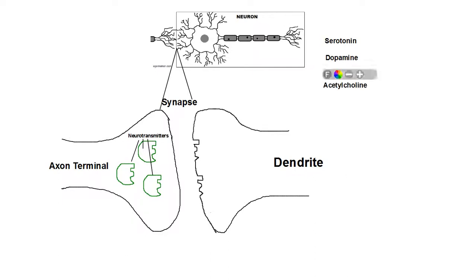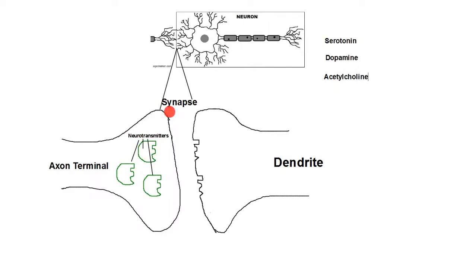A third neurotransmitter is acetylcholine — these are just some of the common neurotransmitters. Acetylcholine has to do with movement. So if you are successfully moving your fingers, that's because the neurons involved in movement are successfully sending acetylcholine neurotransmitters into the synapse, binding with the receptor sites, and sending action potentials. Too much acetylcholine would cause seizures, and if you have too little, then you're paralyzed.